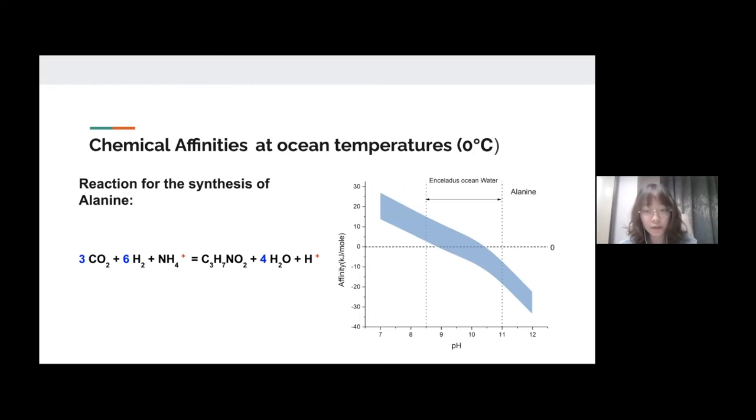Now let me introduce our settlement results. We first calculated the synthetic affinity of amino acid on the ocean surface of Enceladus. We use carbon dioxide, hydrogen and ammonia to synthesize amino acids. We come to the conclusion, although the affinity of all amino acids decreases as pH increases, the affinity of most amino acids is positive overall, which means that the synthesis reaction is likely to occur thermodynamically.